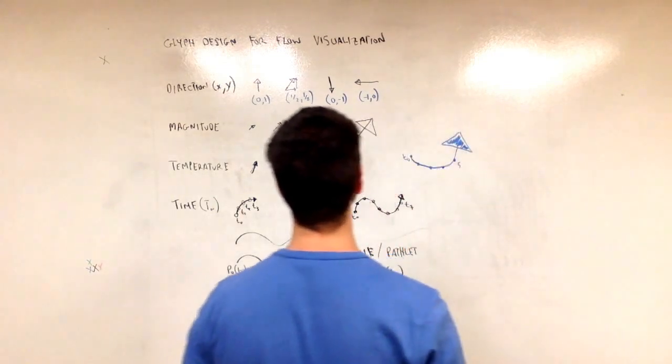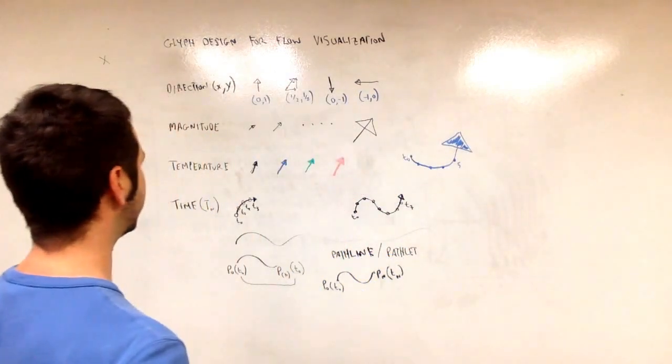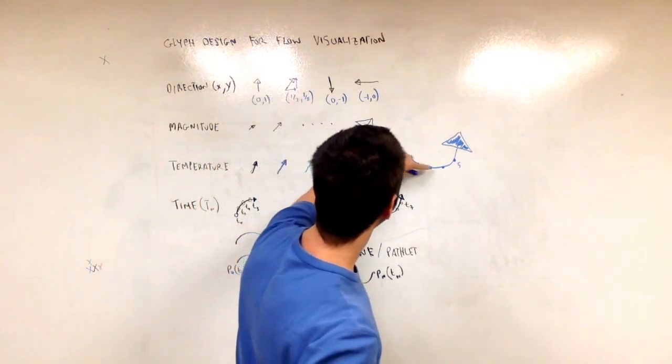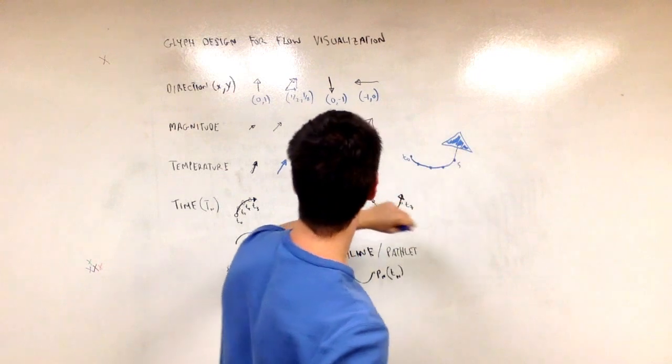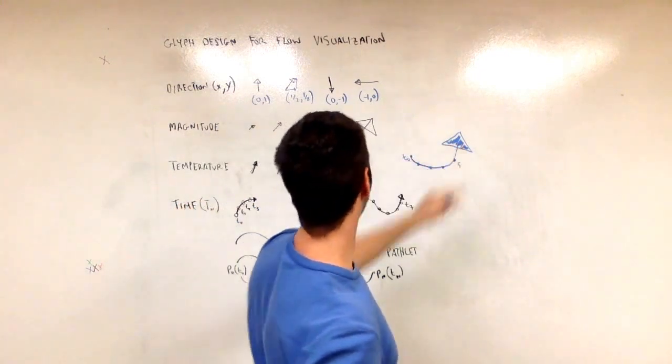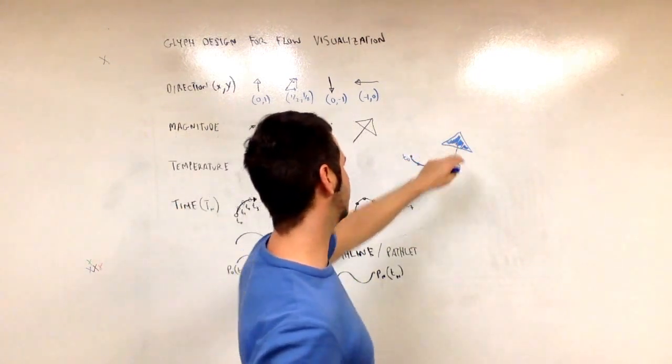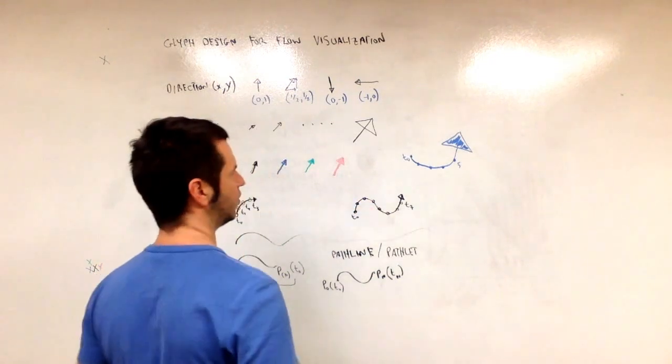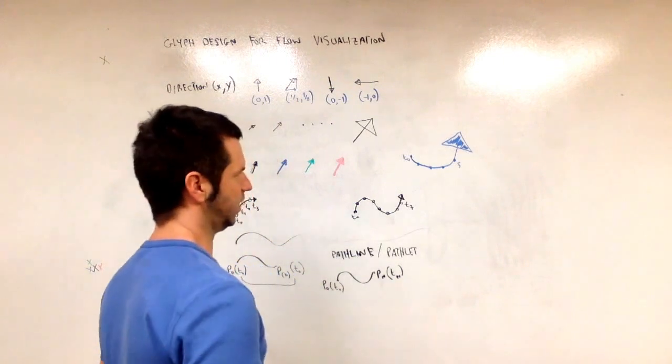I got direction is encoded in the direction of the curve. Magnitude is encoded in the size of the arrowhead. The temperature is encoded in the blue color. And then the time is encoded also in the curvature, the length of the curve in this case.